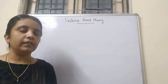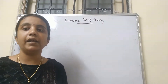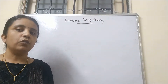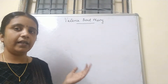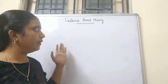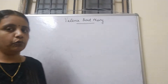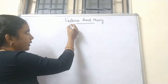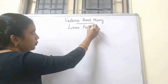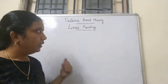In Werner's theory, he didn't explain anything about the color of the coordination complex, and he didn't give any idea about the magnetic property of the coordination complex. To overcome these limitations, we have valence bond theory, which provides those explanations.